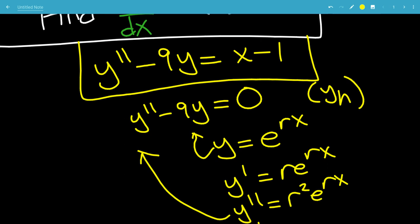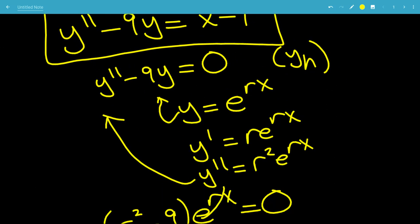So after this, we'll get the particular solution, and then we'll add both of them up to get the real solution for y. But the building blocks for yh is this, e to the rx.